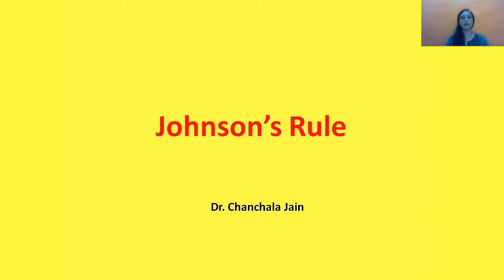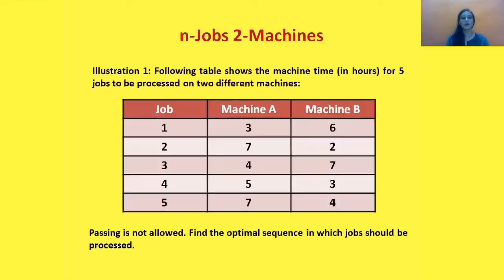I'm taking one question here to make you understand this type of problem. We are given five jobs to perform on two machines and their respective processing times on both machines are given. With this we need to find the optimal sequence of jobs, the elapsed time of all five jobs, idle time on Machine A, and idle time on Machine B. Also, passing is not allowed — meaning we must process jobs first on Machine A, then pass them to Machine B.